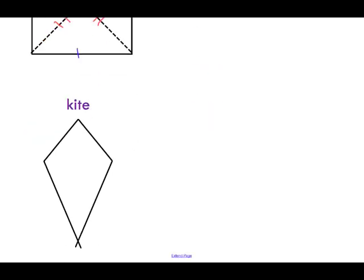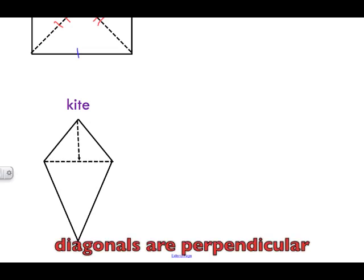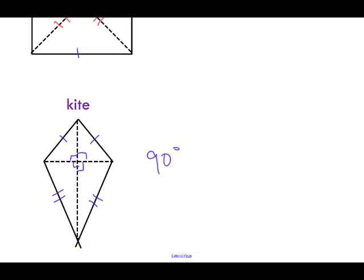Looking at the kite now, we are going to bisect the vertex — bisect this and bisect this. In the kite, we know this side equals that side, and this side equals that side. The diagonals, just like in a rhombus, will bisect at 90 degree angles, so the diagonals are perpendicular to one another.